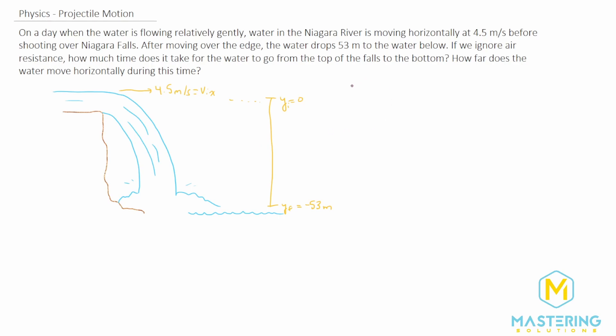Looking at the y component, we'll use the formula y final equals y initial plus the initial velocity in the y direction times time plus one half the acceleration times the time squared. The initial velocity in the y direction is zero. The initial y as we already talked about is going to be zero as well. So y final is equal to one half the acceleration times the time squared.